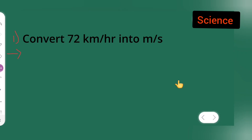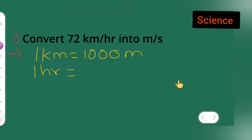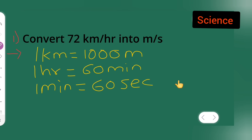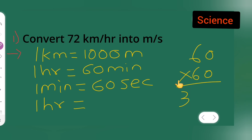Let me turn the page. You already know that one kilometer is equal to 1000 meters. Next, we also know that one hour is equal to 60 minutes, and one minute is equal to 60 seconds. So to convert one hour into seconds, you multiply 60 by 60, which gives you 3600 seconds.